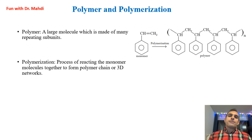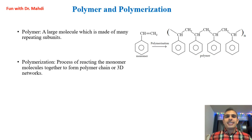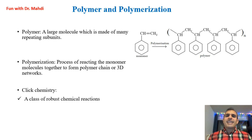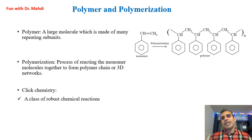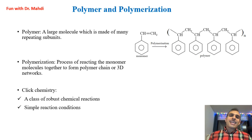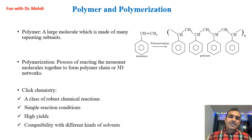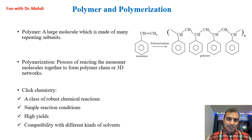In this video, we would like to investigate using click chemistry for doing polymerization. But the question is: why click chemistry? Click chemistry has a lot of advantages. Click chemistry is a class of robust chemical reactions — we can have very robust bonds. Simple reaction conditions, high yields, and compatibility with different kinds of solvents are other advantages of click chemistry reactions.